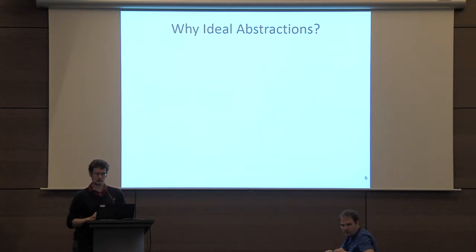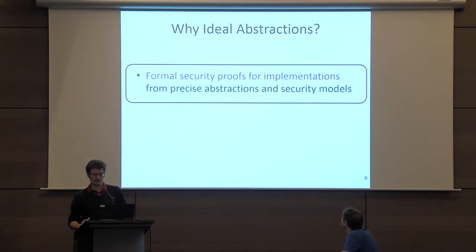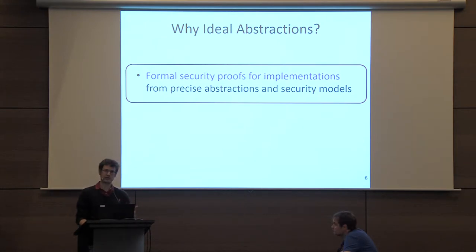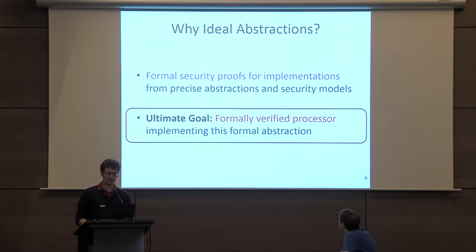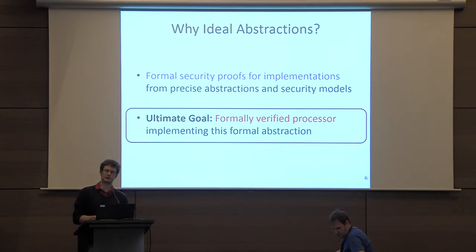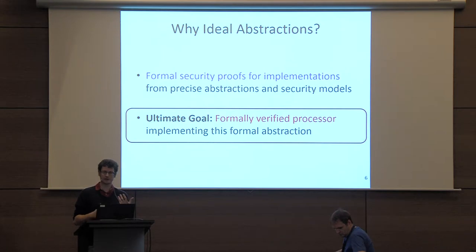Why would we want a more formal, ideal abstraction? Systems built on top of trusted hardware have historically tended to prove security in an ad hoc fashion because of a lack of a formal model. A formal and precise abstraction would help fix this. It's important to note that we can't claim today that any secure processor on the market actually realizes any form of ideal abstraction we can come up with. The next important step is that we'd want secure processors that can be formally verified to actually implement some form of ideal abstraction.